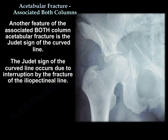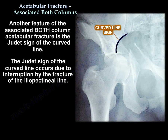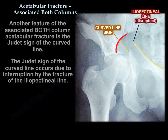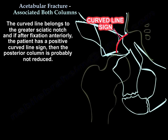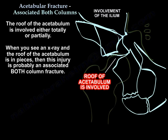Another feature of associated both column fracture is the sign of the curved line, which occurs due to interruption by the fracture of the iliopectineal line. This line belongs to the greater sciatic notch, and if after fixation the patient has a positive curved line sign, then the posterior column is probably not reduced.